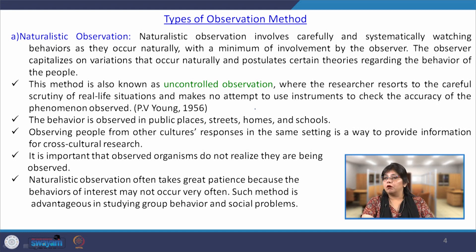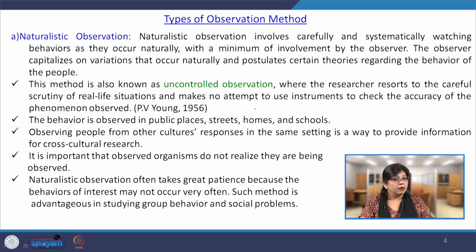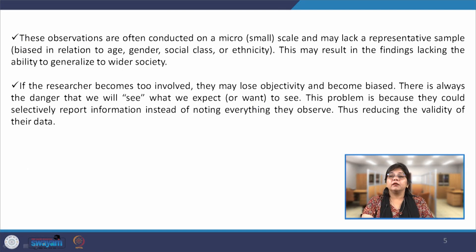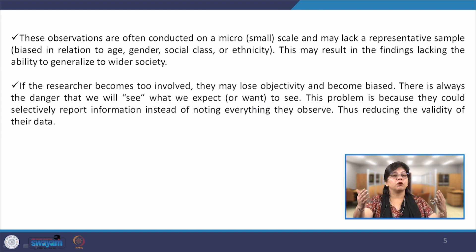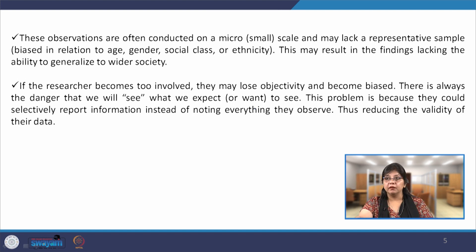This observation method has great applicability in cross-cultural research and understanding social problems. However, these observations are often conducted on micro scales and may lack a representative sample, with possible biasness irrespective of age, gender, class, or ethnicity, which may result in lacking the ability to generalize to wider society. When observing people in natural situations, it becomes very difficult to expand those observations to a larger sample. A small sample is more applicable with naturalistic observation, making the study less generalizable because we cannot replicate the observations onto a larger sample.